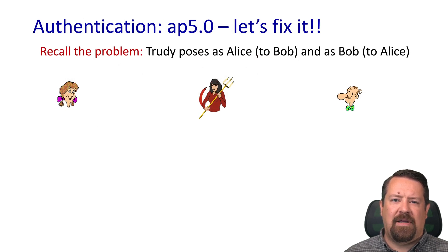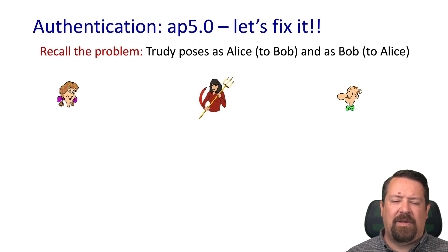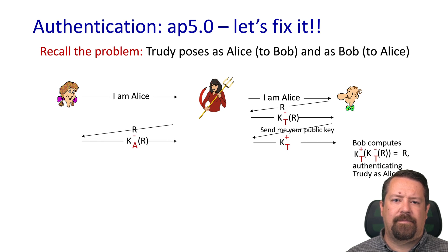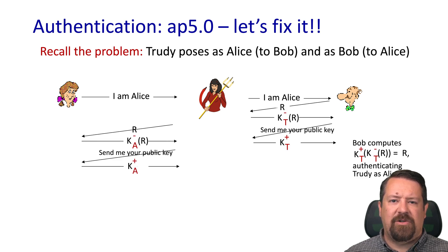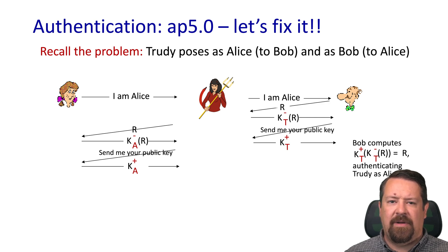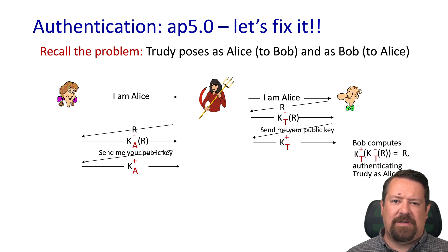Now we can revisit authentication protocol 5.0, now that we understand message integrity. The problem was that our attacker could pose as Alice to Bob and as Bob to Alice — sitting in the middle, decrypting messages, reading them, re-encrypting and passing them along. Bob thinks he's talking to Alice, Alice thinks she's talking to Bob, but actually they're both talking to Trudy in the middle.